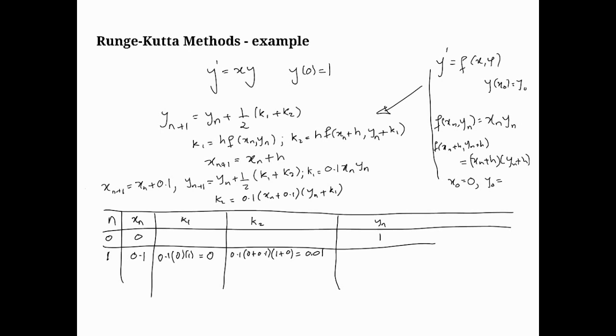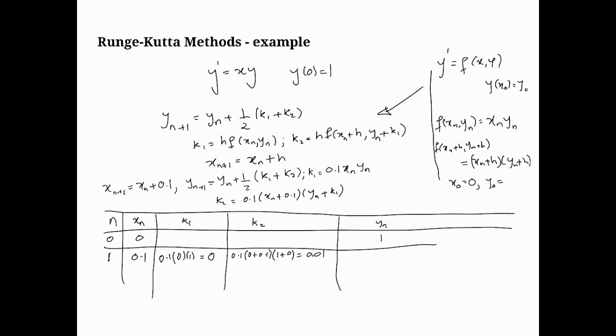Now we come to our y1, in fact, is what we're calculating. This is the formula we're using. yn plus 1 is yn plus half k1 plus k2. So, obviously, that means y0 first, so it's going to be 1 plus half into k1 plus k2, so that's 0 plus 0.01. So that's equal to 1.005. So we've got our first value from the formula, from Runge-Kutta.